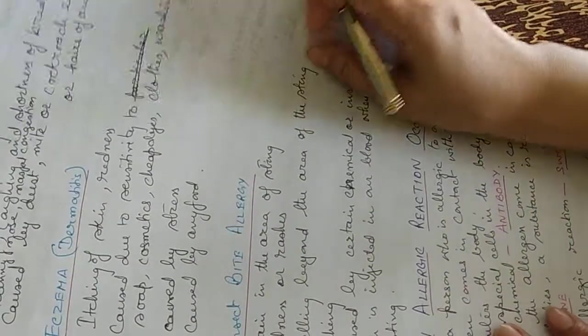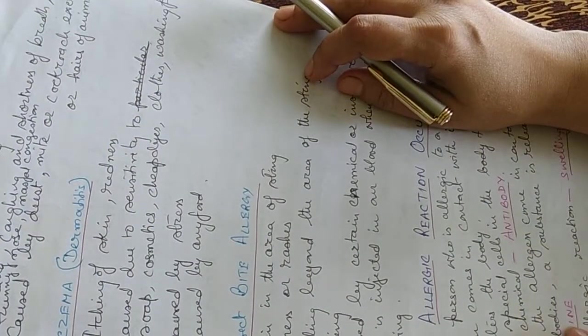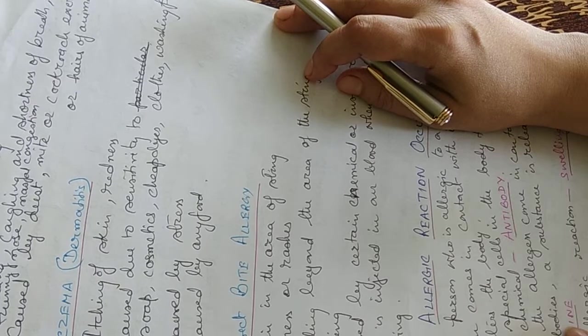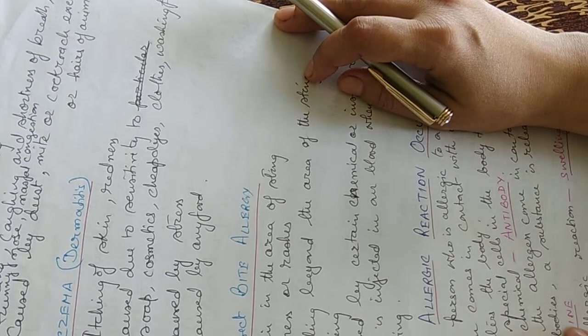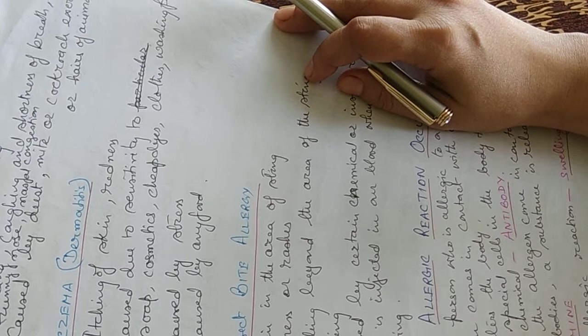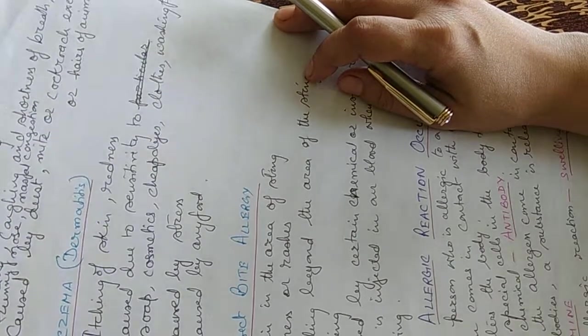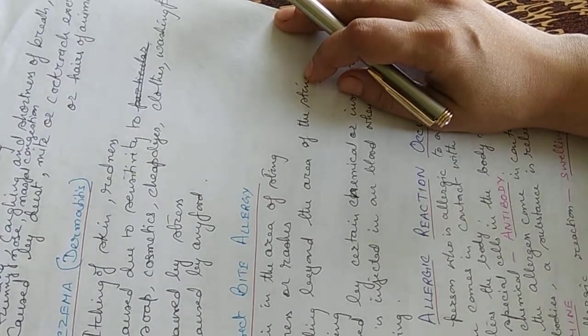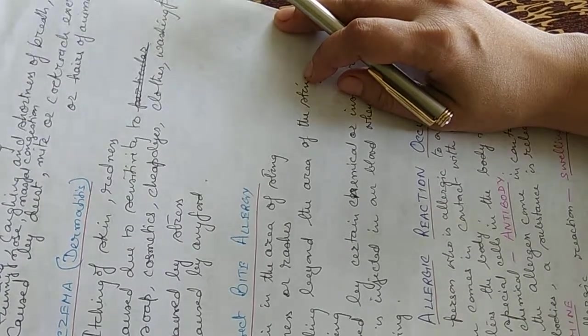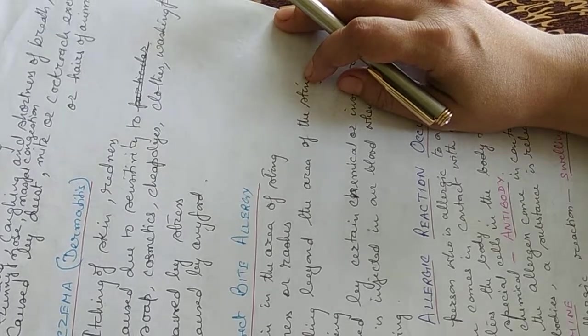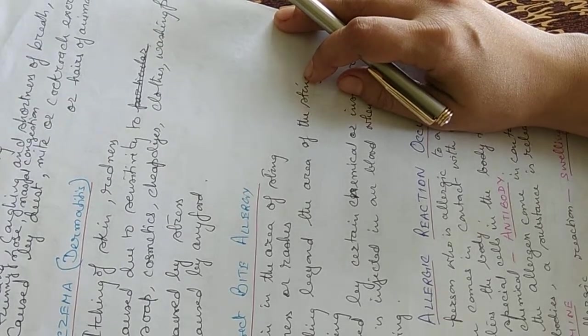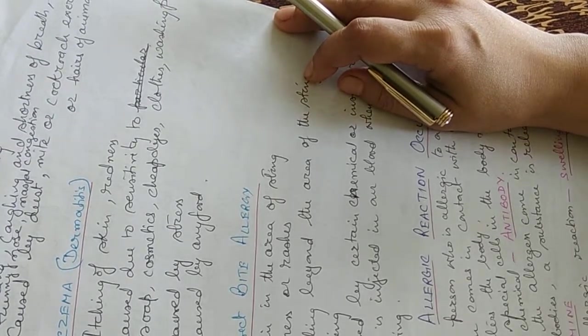Eczema or dermatitis is a type of skin infection. It causes itching of the skin and redness. It's caused by hypersensitivity to certain soap, cosmetics, cheap dyes, clothes or washing powder. It can be caused by stress or also by any food.